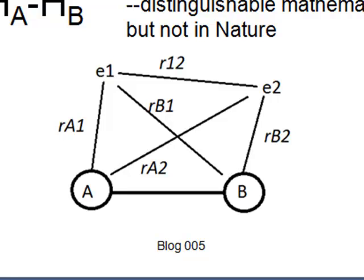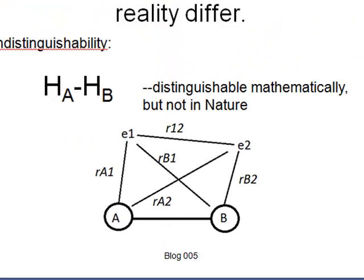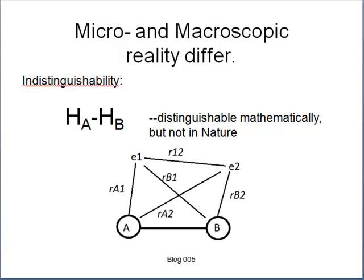The hydrogen molecule bond is one of the simplest. Recall that a proton, A and B, are positively charged, and the electrons are negatively charged. Since likes repel and unlikes attract, we have two repulsions, between the two protons and the two electrons, and four attractions, between electrons and protons.